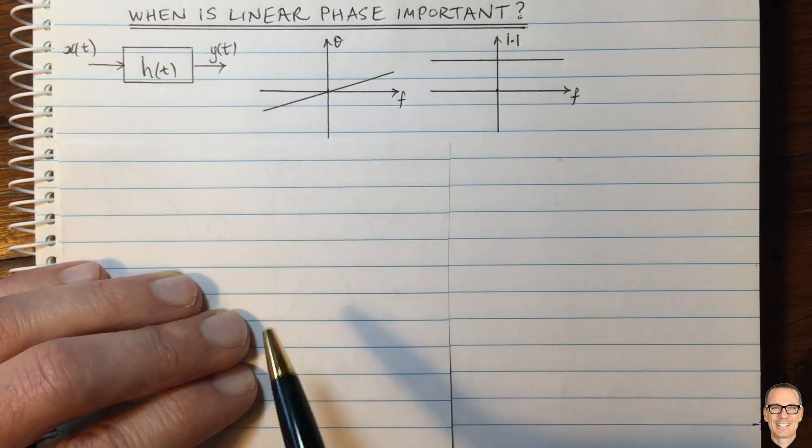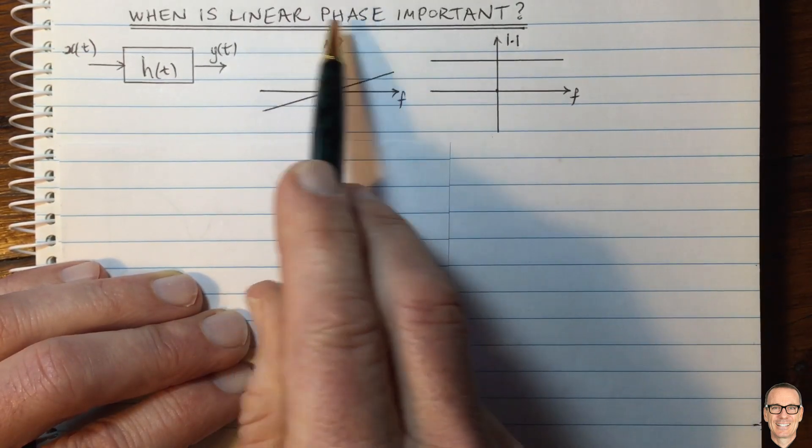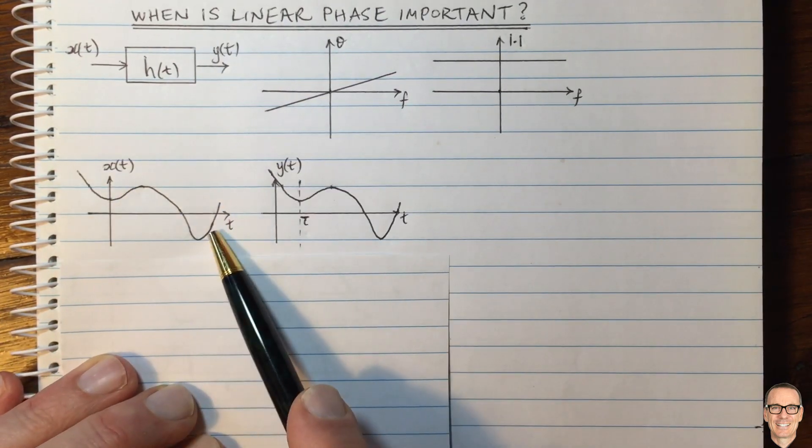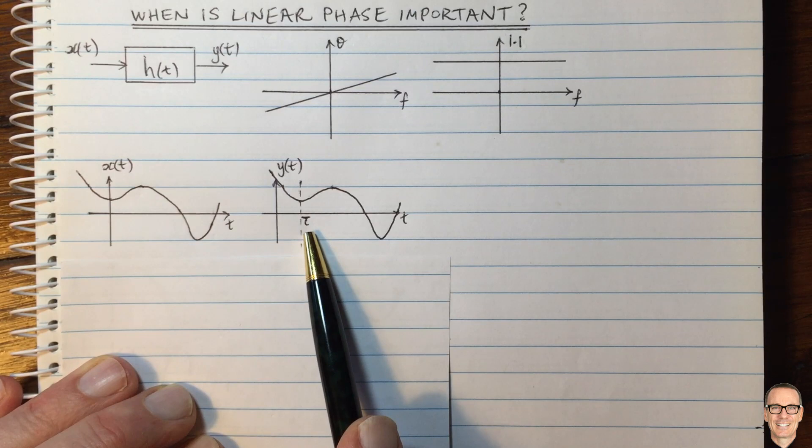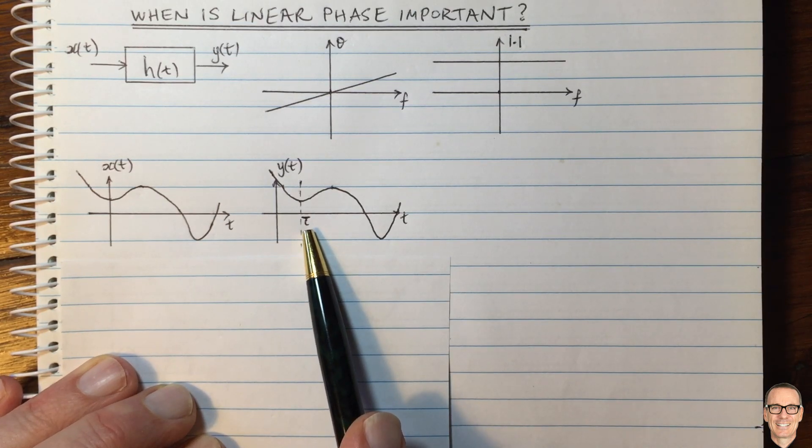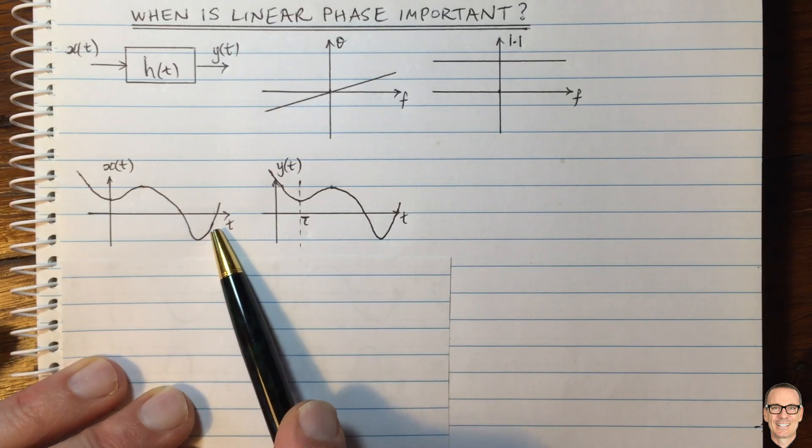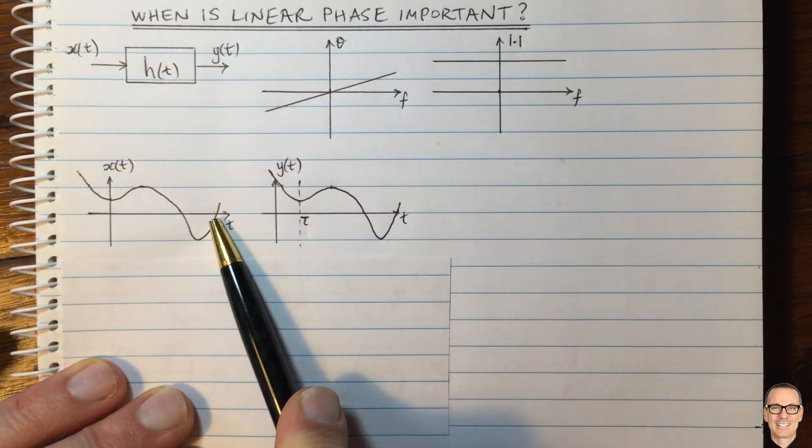So let's just think about why that is, and then we'll come back to say when we really care. So here I've drawn a waveform, and then I've drawn it again with a time delay of Tor. Now let's think about this waveform in terms of some of its components. We know that every waveform can be written as a summation of sinusoids, according to Fourier theory.